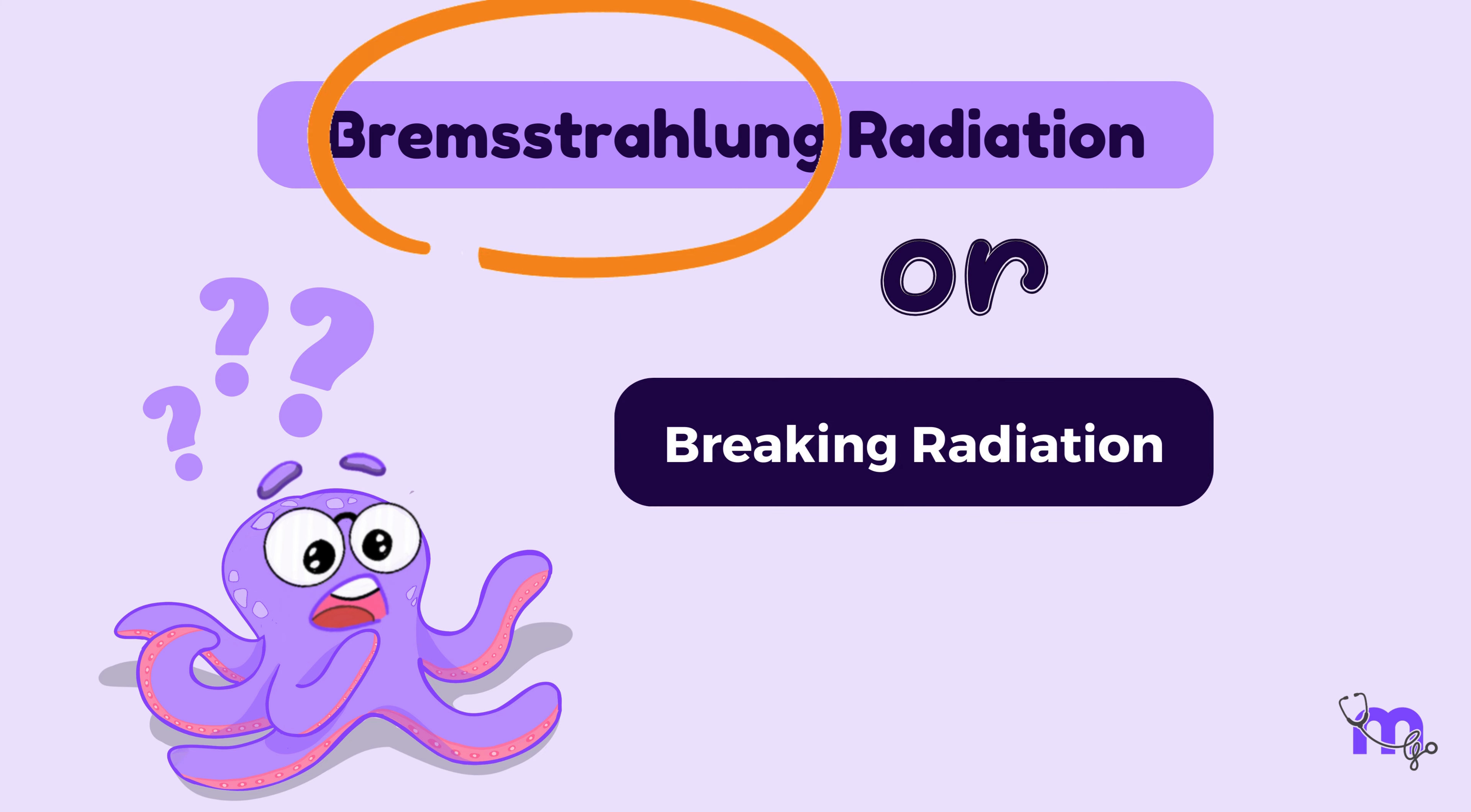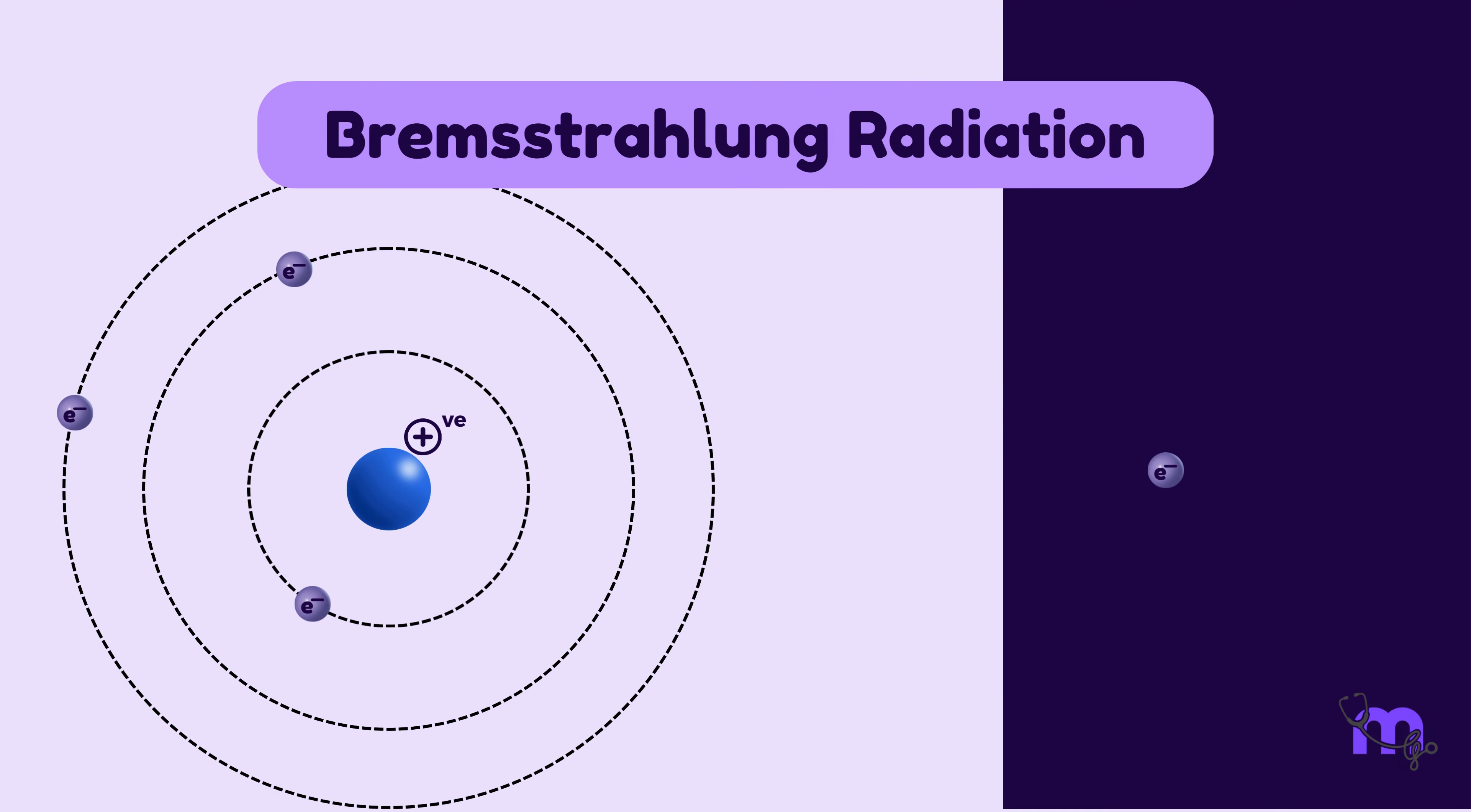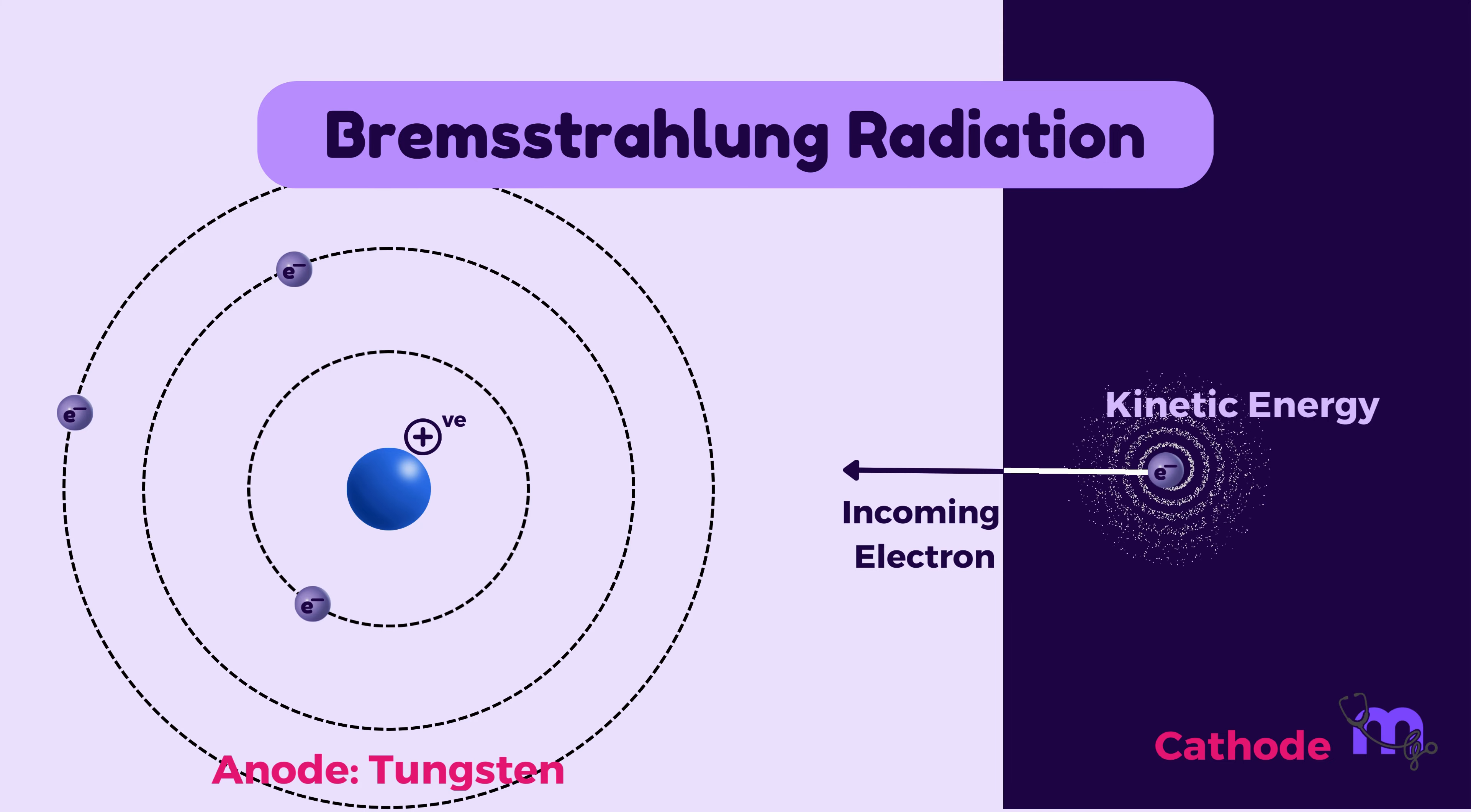Let us first understand what is bremsstrahlung radiation or breaking radiation. Bremsstrahlung in German means breaking. The high-speed bombarding electron or incoming electron from the cathode with a particular kinetic energy will interact with the nucleus of the atom of the target material, which is tungsten, in the X-ray tube.